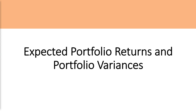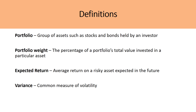Today we're going to be covering the topics of expected portfolio returns and portfolio variances. Before we begin, it's important to cover some key definitions. A portfolio is a group of assets such as stocks and bonds held by an investor. A portfolio weight is the percentage of a portfolio's total value invested in a particular asset. The expected return is the average return on a risky asset expected in the future. And variance is a common measure of volatility. We're going to work through these in examples to really understand them.